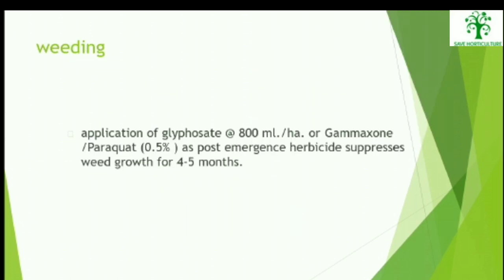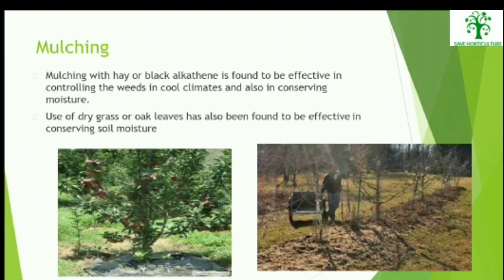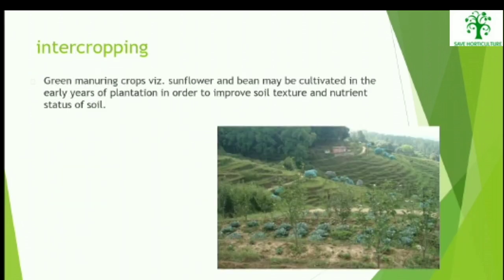Weeding: The application of Glyphosate at 800 ml per hectare or Gramaxone as post-emergence herbicide suppresses weed growth for about 4–5 months. Mulching with hay or black polythene is very effective in controlling weeds in cool climates and also in conserving moisture. Use of dry grass or oak leaves has also been found effective in conserving soil moisture.